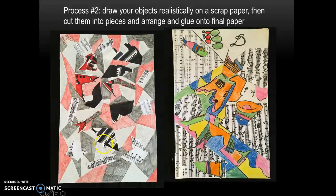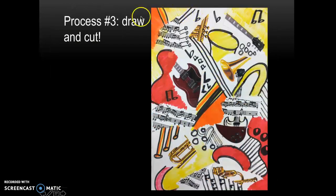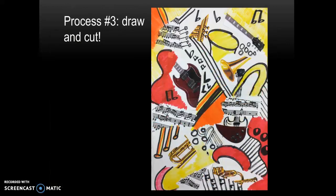Looking closely at these two student examples, you can see a piano, a guitar, and some music notes. They drew these objects together in a realistic way, then cut them into pieces and glued them down, filling the background space with colors, lines, and shapes. Same with this other student — they cut their guitar, clarinet, and music notes into pieces. The third process is to combine both: draw and abstract your objects and also cut pieces and fit them together within your picture. I like this process best — you get a lot of variety with some drawing, some cutting and gluing, and it's more interesting to look at. But you choose your process.